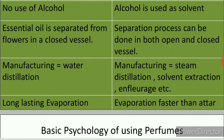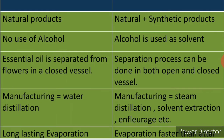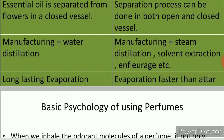In the manufacturing of Athar, water distillation is used, whereas in the manufacturing of perfumes, steam distillation, solvent extraction, and enfleurage are used. Athar also has longer-lasting evaporation, whereas perfumes evaporate faster than Athar.